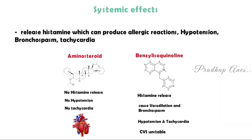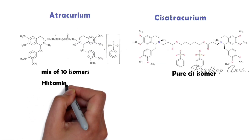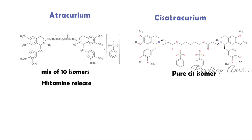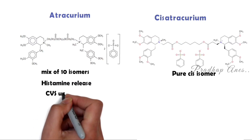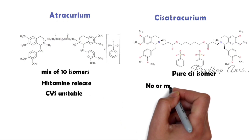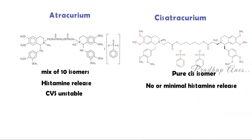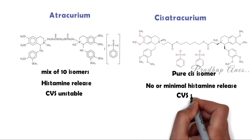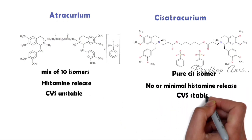All non-depolarizing benzylisoquinoline muscle relaxants have histamine release. So Atricurium also has histamine release and causes hypotension, bronchospasm, and tachycardia. This makes Atricurium a cardiovascular unstable agent. Whereas in Cisotricurium there is no or minimal histamine release, which makes it a cardiovascular stable agent.